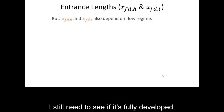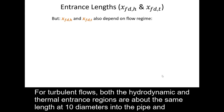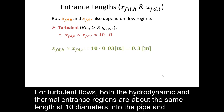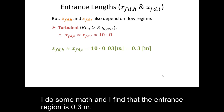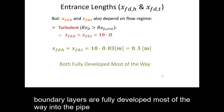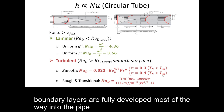I still need to check if the flow is fully developed. For turbulent flows, both the hydrodynamic and thermal entrance regions are approximately 10 diameters into the pipe. Doing the math, the entrance region is 0.3 meters, so both boundary layers are fully developed for most of the pipe.